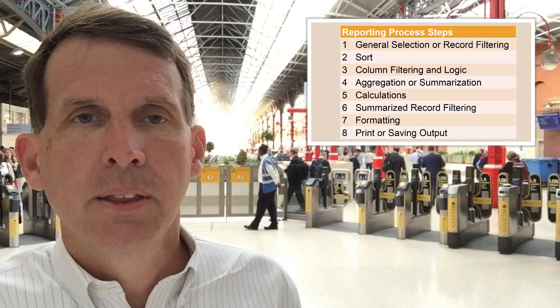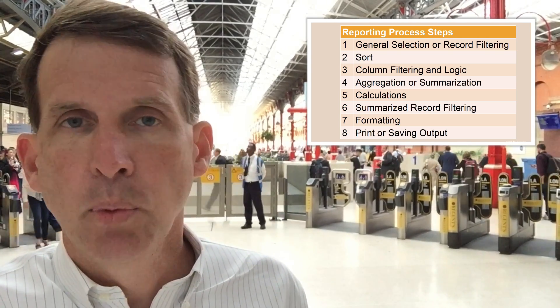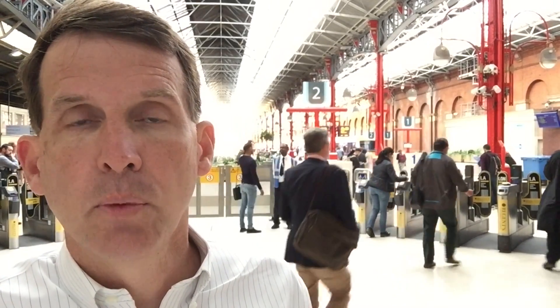Those might be the simple steps in the report process. Let's go through those in a little more detail. Record selection — rough record filtering is simply the process of determining if the master file record is in or out of scope for the report. Sorting is determining which fields on the master file, or things that could be joined to from the master file, are going to be the keys for the sorted output, the aggregated sorted output, if the report is aggregated.